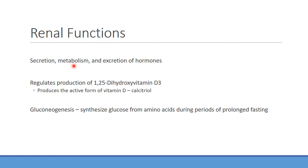The kidneys help with secretion, metabolism, or excretion of certain hormones and play a big role in activating vitamin D. Vitamin D2 or D3 taken orally is not the active form — activation occurs first in the liver, then in the kidneys, forming 1,25-dihydroxyvitamin D3, also called calcitriol. If you see a patient on calcitriol, they likely have kidney problems and can't form active vitamin D. This leads to issues with calcium homeostasis and excessive bone resorption.